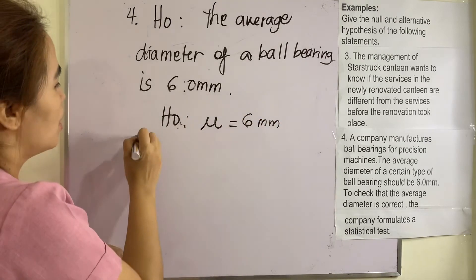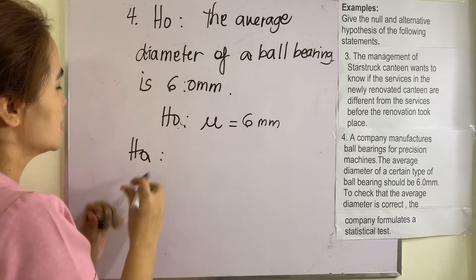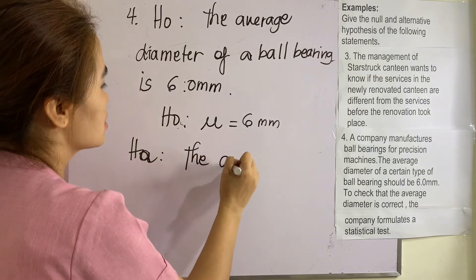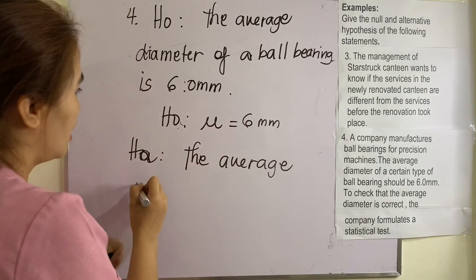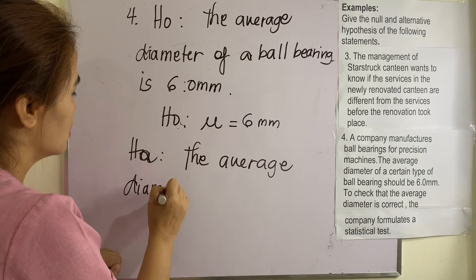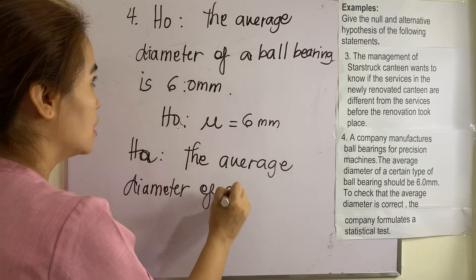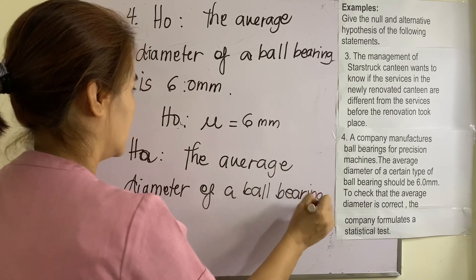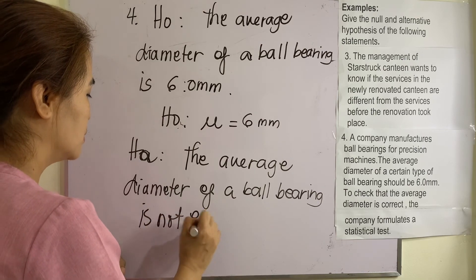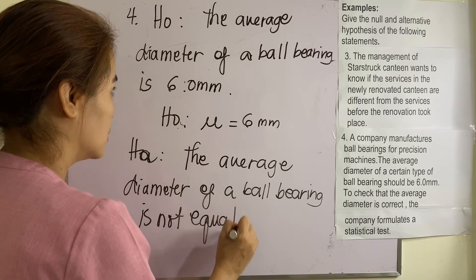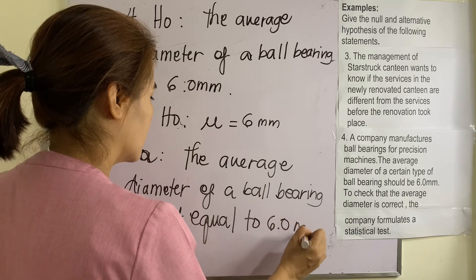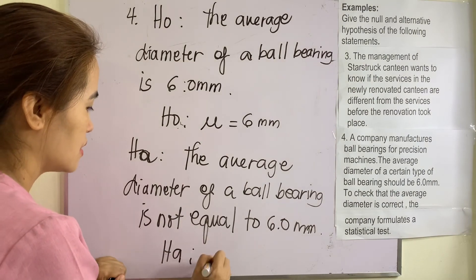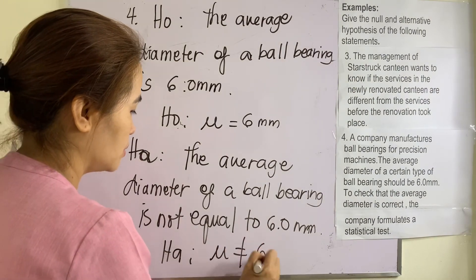So our alternative hypothesis would be: the average diameter of a ball bearing is not equal to 6 mm. In symbol, mu is not equal to 6 mm.